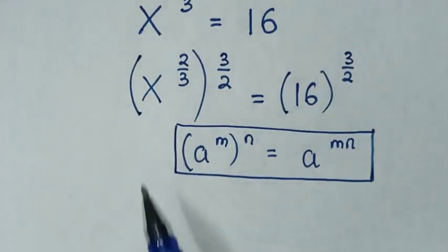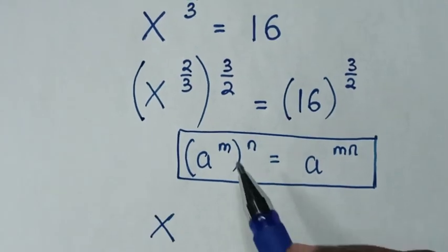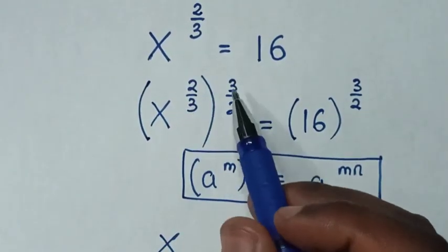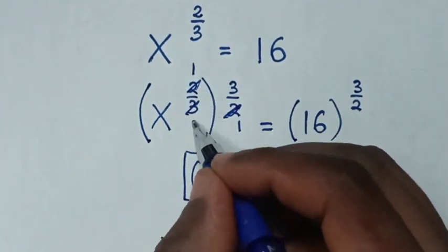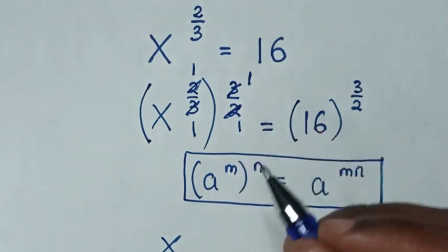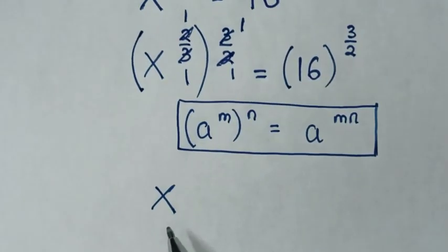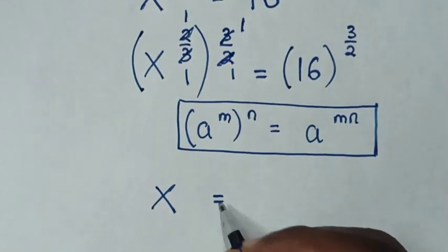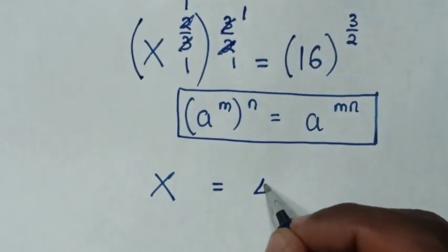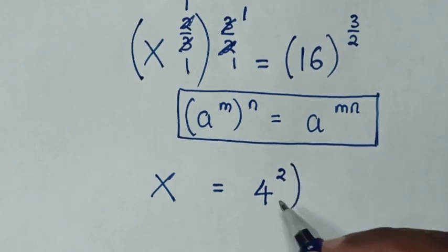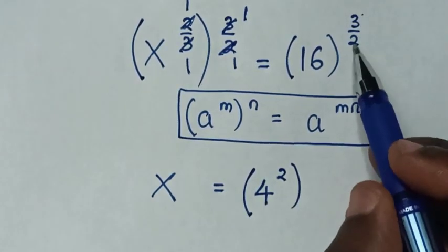Then it will be x to the power of, we'll multiply these powers which can be simplified, 2 by 1 and 2 by 1 and 3 by 1 and 3 by 1. So it will be x to the power of 1, which is the same as x equals 16. 16 is the same as 4 to the power of 2, then in brackets to the power of 3 over 2.